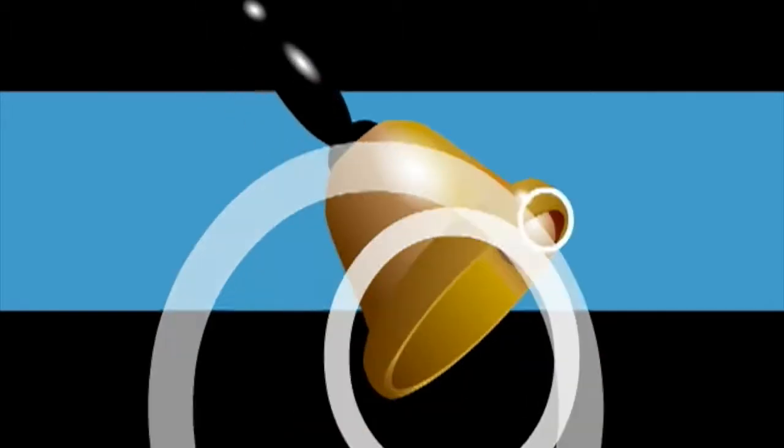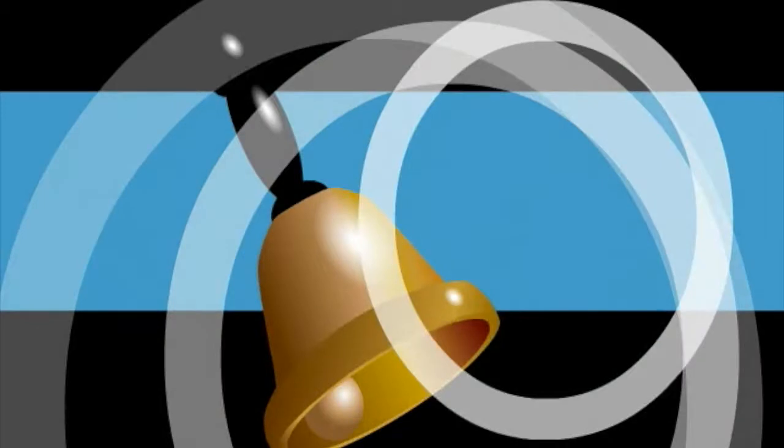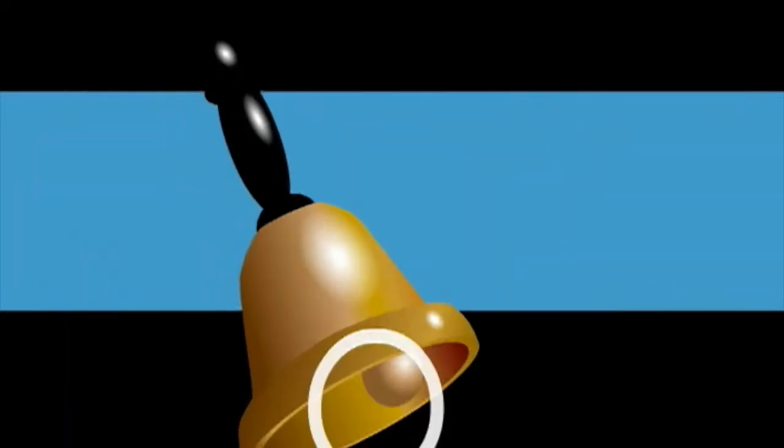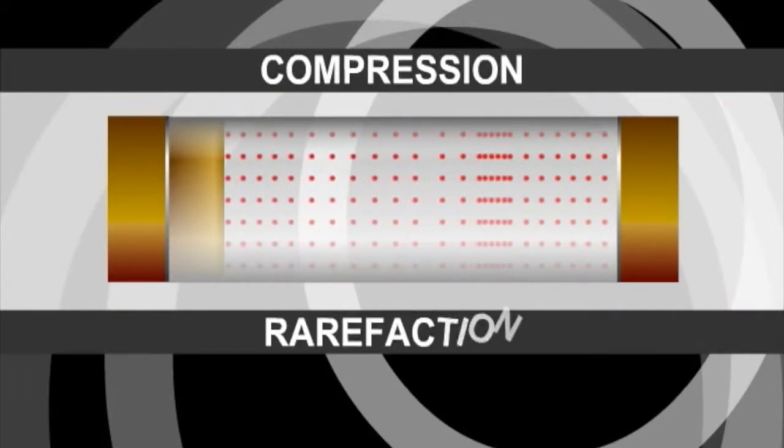When sound is generated, vibrations move through the air propagating away from the source. A sound wave propagates through a medium via a series of alternating compression rarefaction cycles.